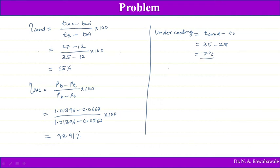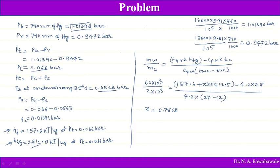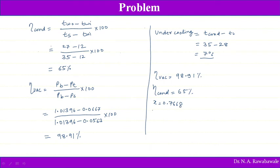Summary of Problem 2 results: vacuum efficiency = 98.91 percent, condenser efficiency = 65 percent, dryness fraction X = 0.768, under-cooling = 15 degrees Celsius.